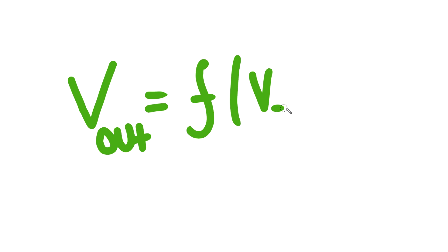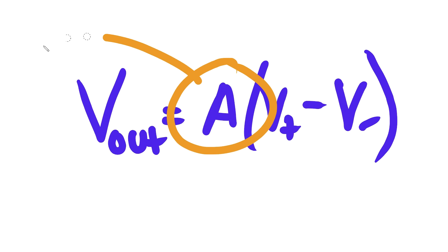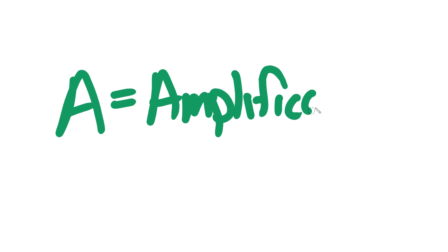The voltage source is dependent on the difference of the voltage inputs. More directly stated, the voltage source is proportional to the difference of the voltage inputs. And that proportionality constant is what is called your gain, or in other words, the amplification.